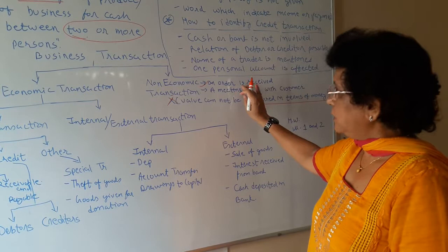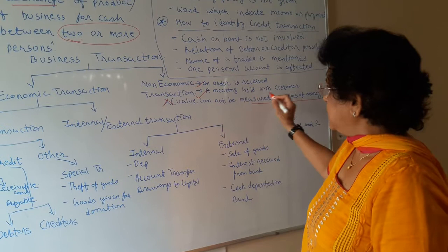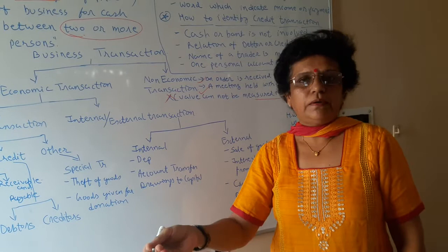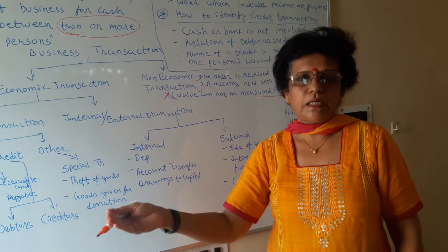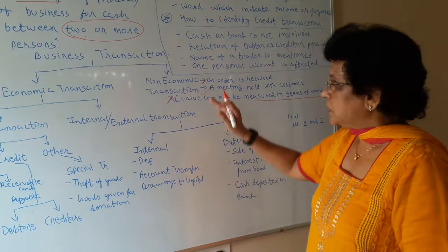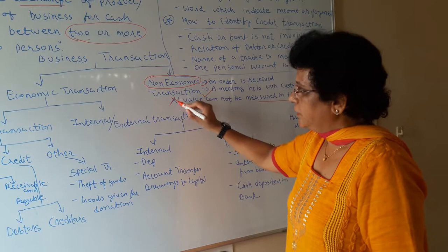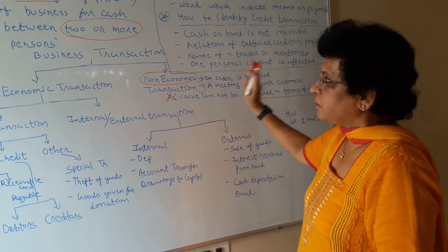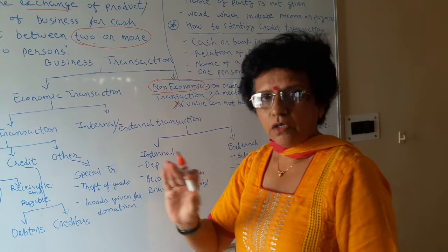The day when you supply the goods, there will be a financial exchange of value and the relationship may be developed as a debtor and trader. Receipt of an order is a non-economic transaction. Another example: a meeting held with the customer for an order or for any contract to be given. You just sit and discuss about that particular project — that meeting itself is not a financial transaction. So whatever non-economic transactions exist are not to be recorded in books of account.